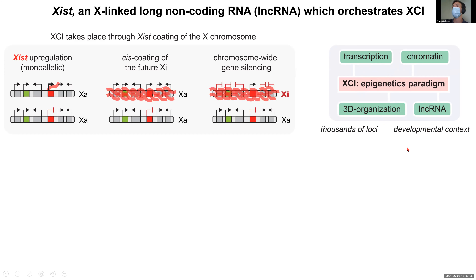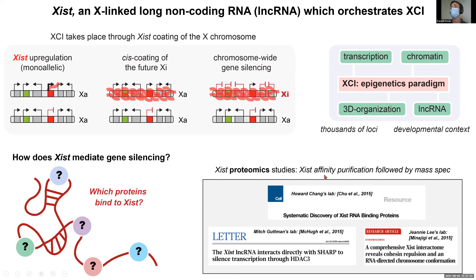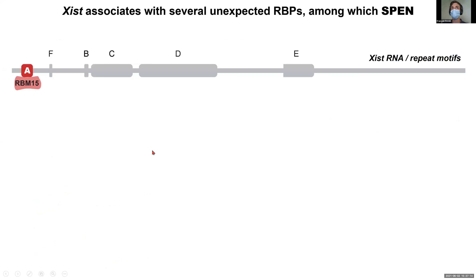A long-standing question is how XIST actually mediates gene silencing. In 2015, three labs independently developed methods for affinity purification of XIST RNA followed by mass spectrometry to identify interacting factors. Several key factors were retrieved: RBM15 interacts with the A-repeat and recruits the m6A RNA methylation complex; HNRNPK is responsible for massive recruitment of Polycomb repressive complexes during X inactivation; and LBR — the Lamin B Receptor — tethers the inactive X chromosome to the nuclear envelope.